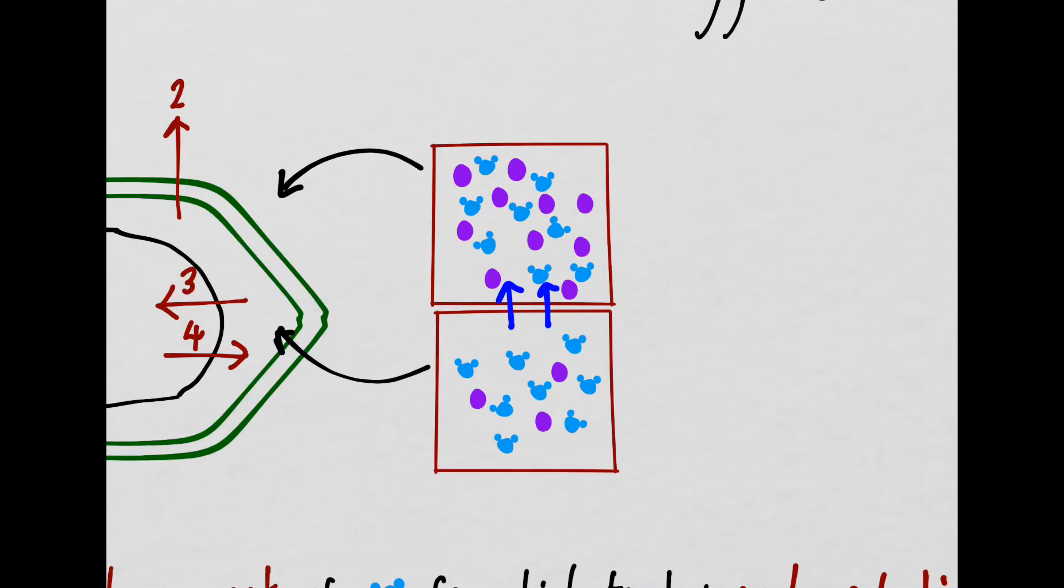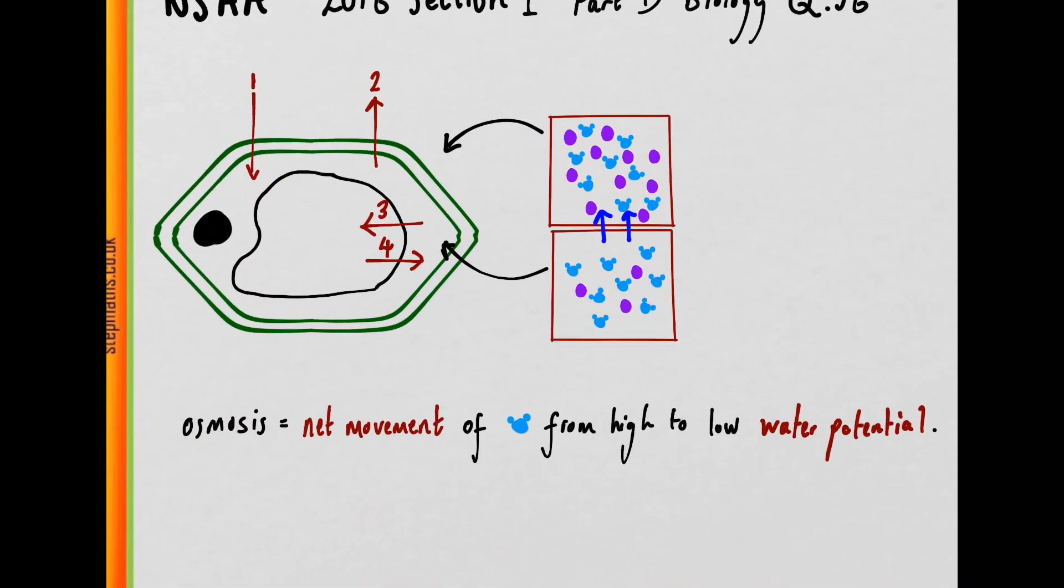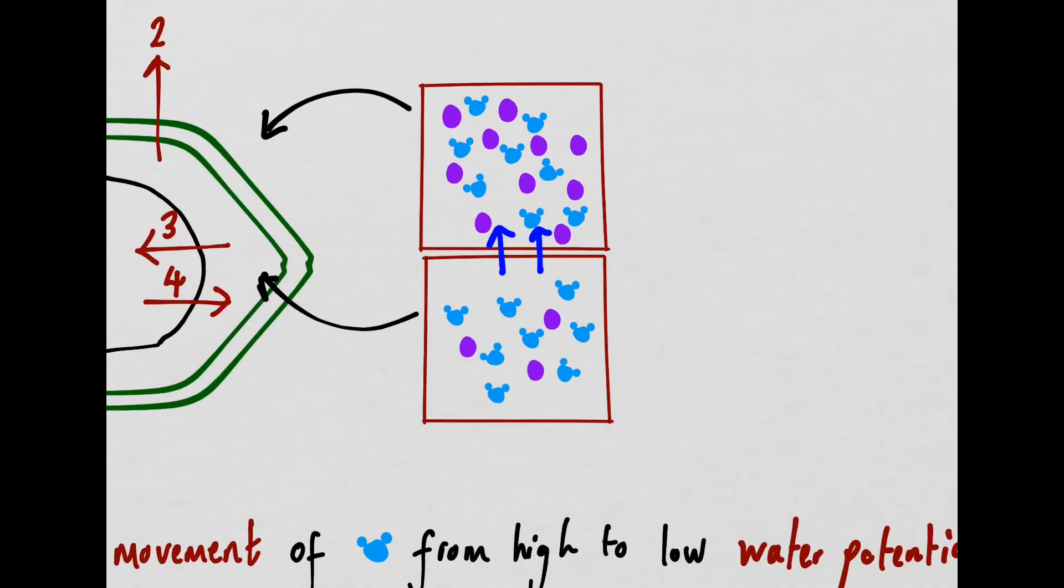We should know that if there is movement from the region of high to low water potential, there will eventually be a concentration change in this region. Since there is a net movement, there will be a change in concentration.